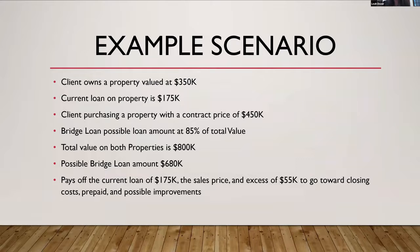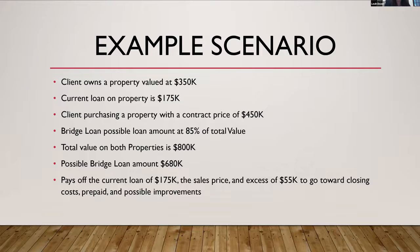That $680,000 pays off the current mortgage of $175,000, the new sales price, and then the excess of $55,000 can go toward closing costs, prepaid items, and possible improvements to the property that you're about to sell. So that can be very helpful.